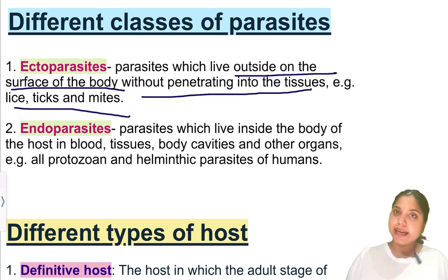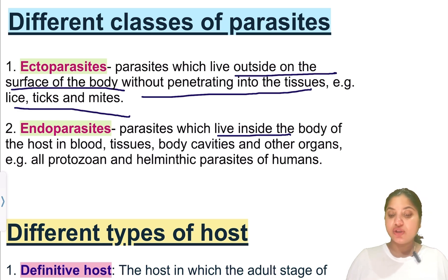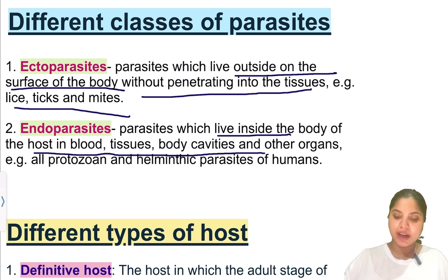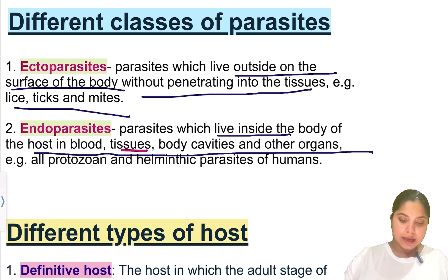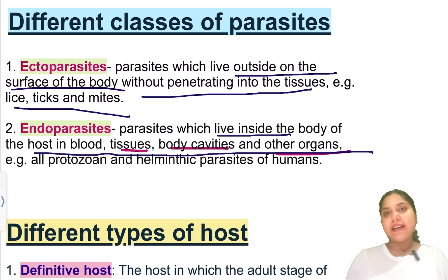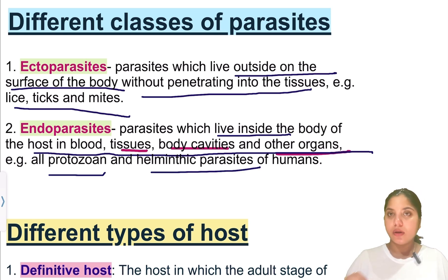Endoparasites are parasites that reside inside the body. That type of parasite is known as an endoparasite. Examples include protozoa and helminth parasites, which survive inside humans.